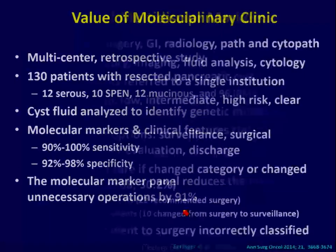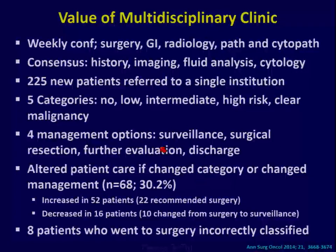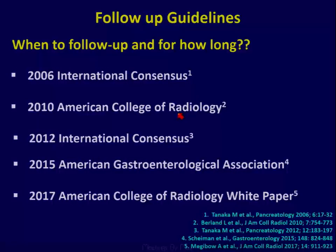This is a study looking at 225 referrals to a single institution. These lesions were put into five categories — no, low, intermediate, high risk, and clear malignancy — with four different management approaches including surveillance, surgical resection, further evaluation, and discharge. In about a third of these patients, we changed the management completely. What was disappointing is that even in a multidisciplinary clinic, eight patients who went to surgery were incorrectly classified.